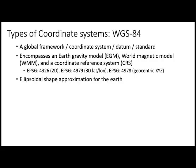WGS 84 is one particular model for the Earth, and this is the one we'll use most commonly. This is your normal latitude-longitude reference frame or coordinate system. It is an ellipsoidal model — an ellipsoidal shape approximation for the Earth — but it also includes a gravity model and a magnetic model. There are several different EPSG codes associated with this, depending on whether you're using 2D, 3D, or geocentric. This is the ellipsoidal model we'll use for many applications involving global coordinate systems and latitude-longitude.